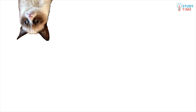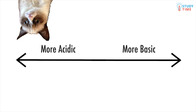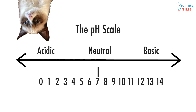Different substances can be more acidic or more basic than others, and so we can place them on a simple scale called the pH scale. The pH scale ranges from 0 to 14, with all numbers below 7 being acids and all numbers above 7 being bases. Because 7 is in the middle, it's neutral. Water is neutral and so has a pH of 7.